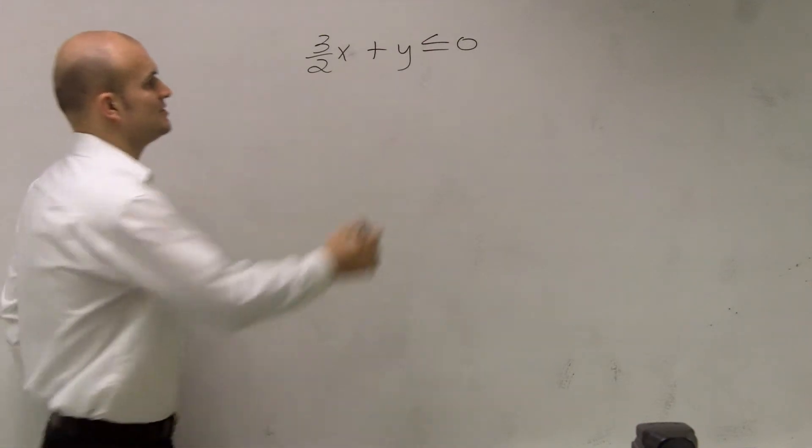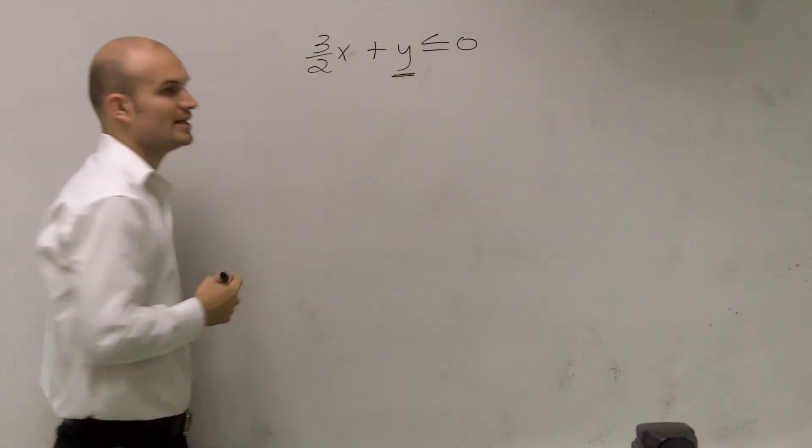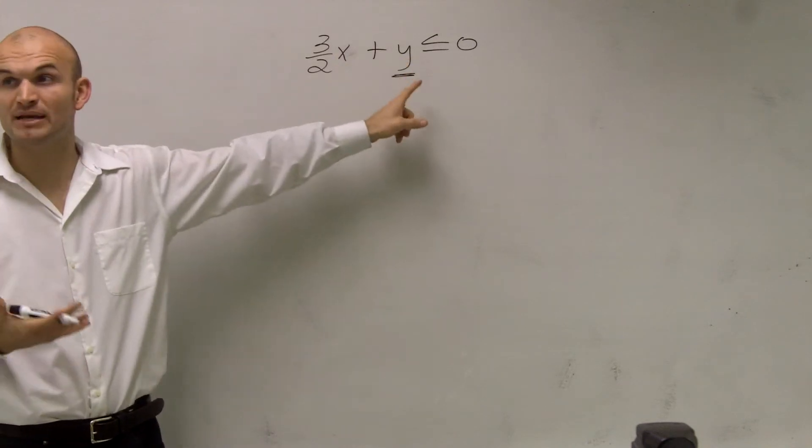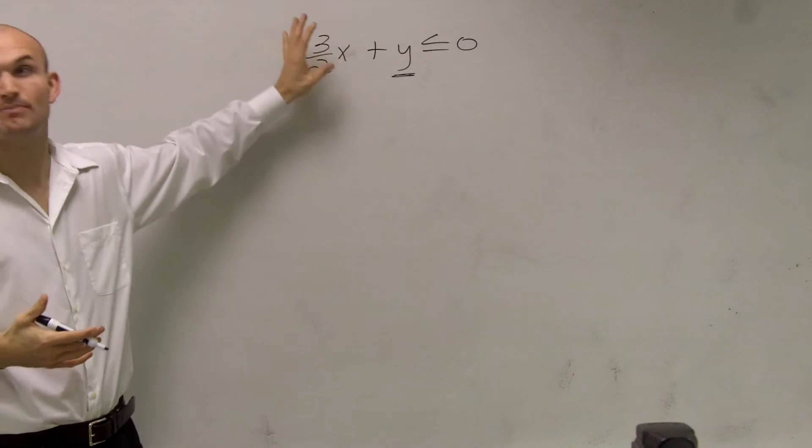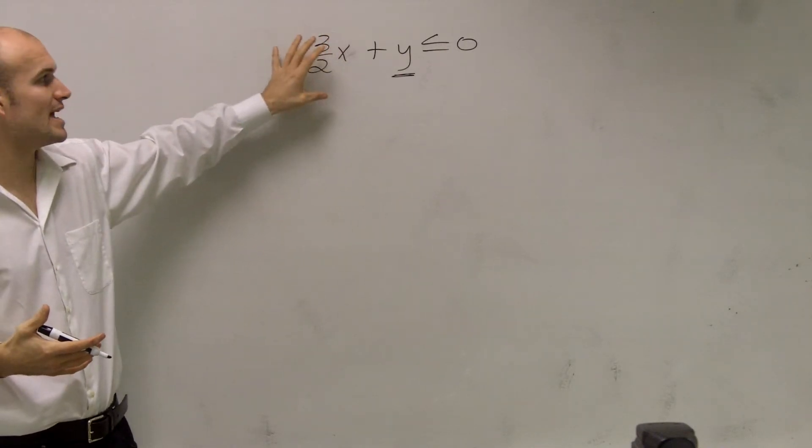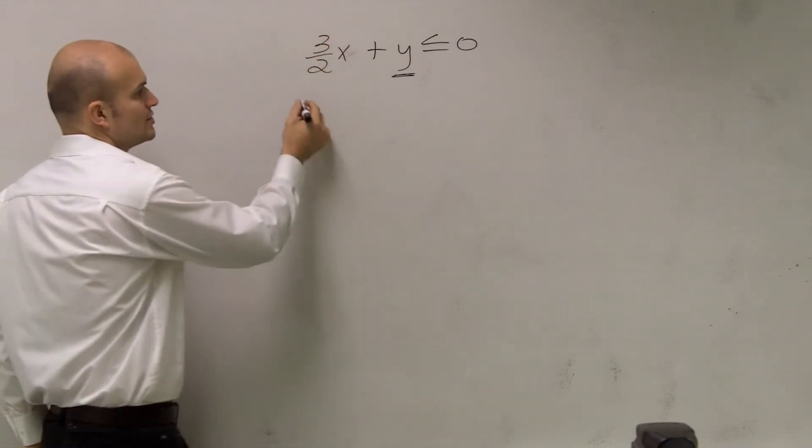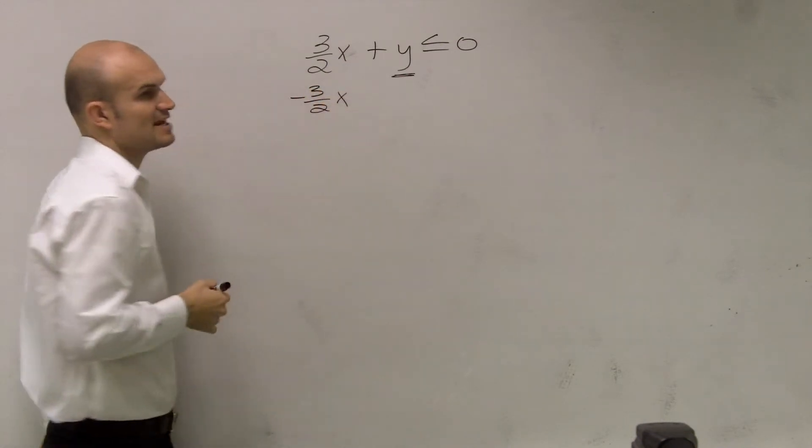To do that, I need to get my y by itself. So I need to think, what is happening to the y that's preventing it from being by itself? Well, I have a 3 halves x that's on that side, and that's a positive 3 halves x. So I need to get rid of that. I'm going to subtract the 3 halves x.